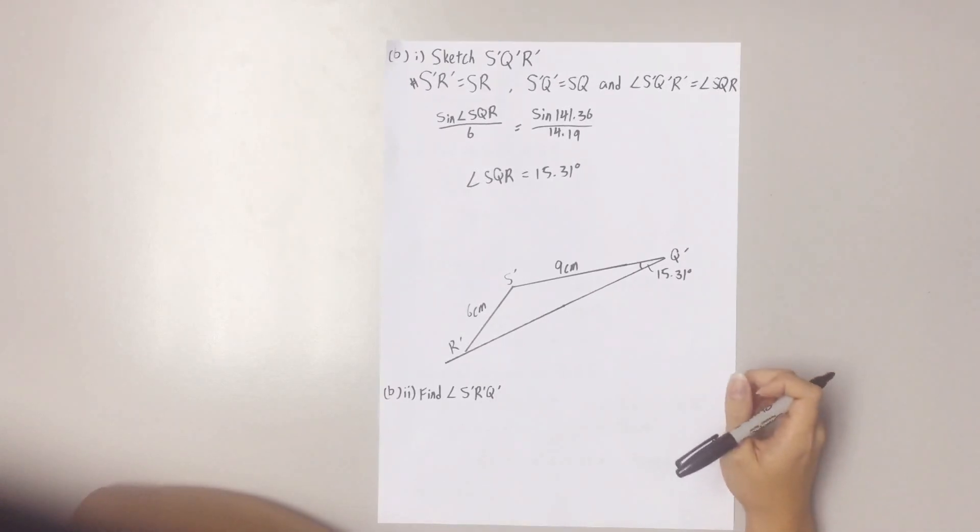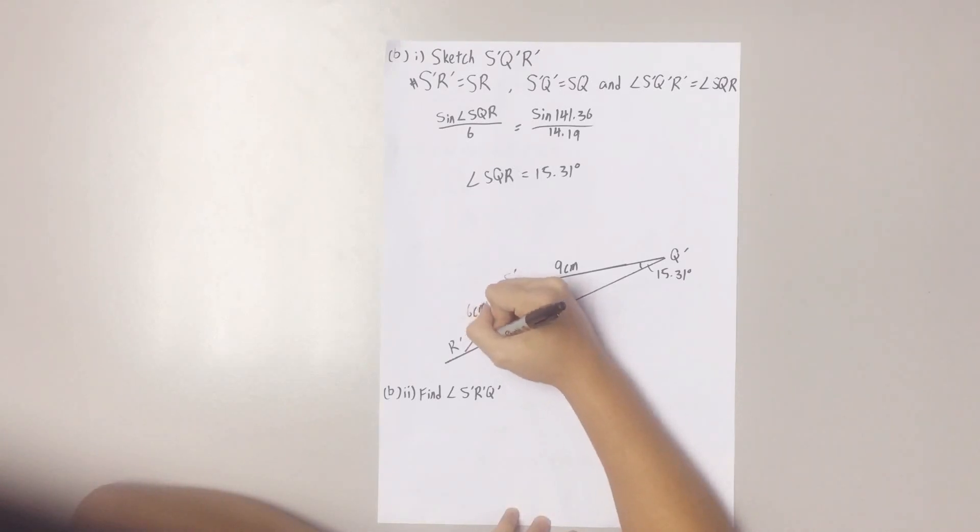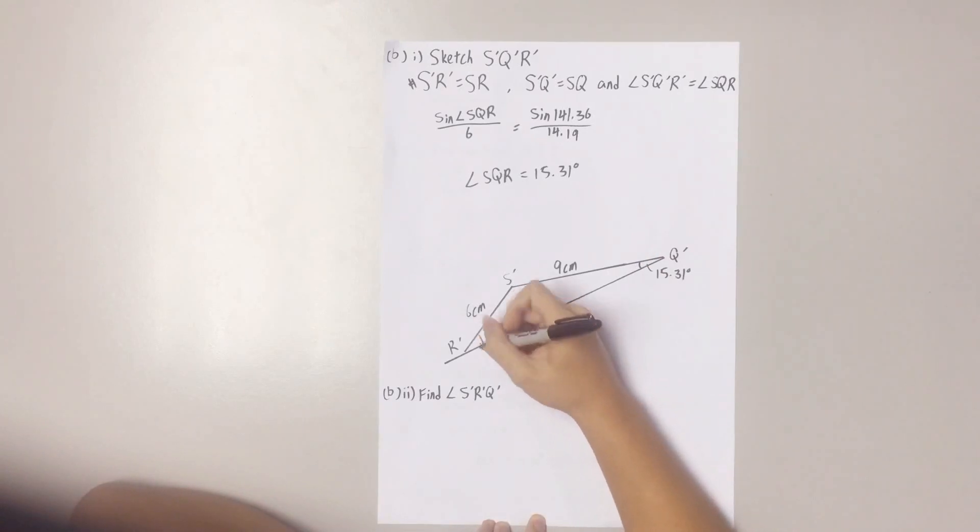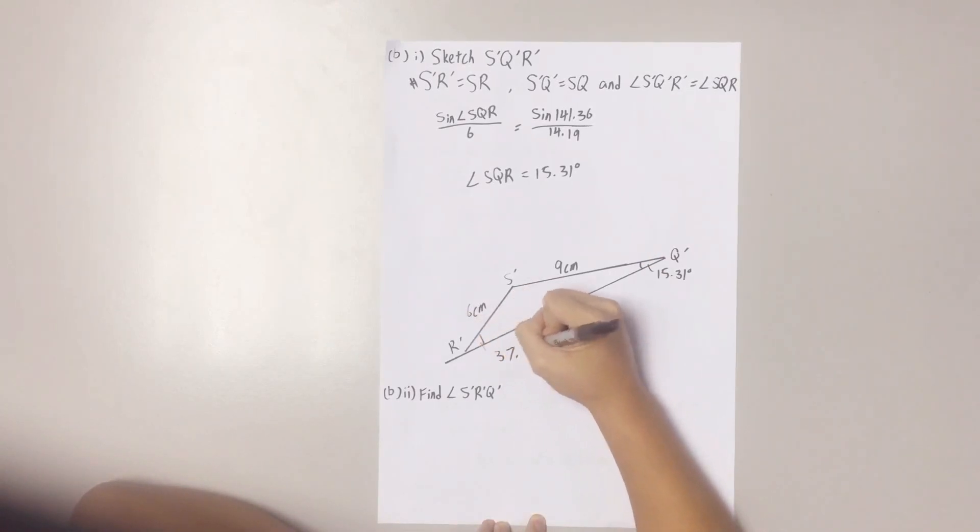Now, B2. Find the angle S'R'Q'. That means this angle right here. There are two ways you can find the angle. First, you could use a protractor like what I did, or you could use the sine rule again. I chose to do the protractor because it's easier. Your answer should be 37.5 degrees.